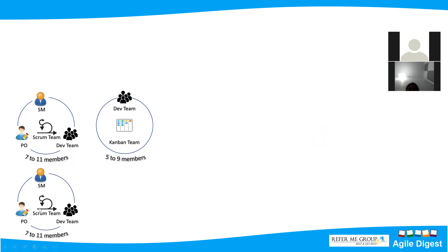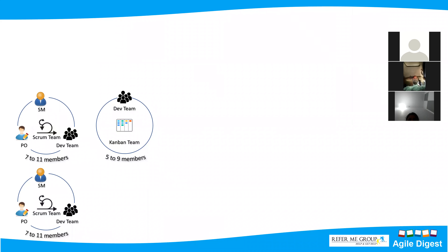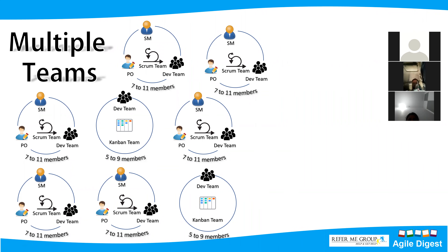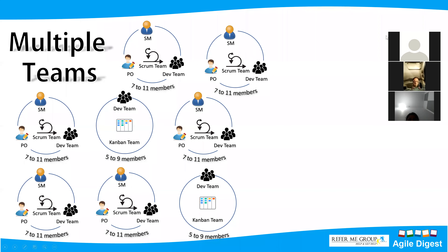If we have multiple teams — in a large organization, to complete one portfolio idea or one product, we may need multiple teams. If we have multiple teams working for one value stream or one big goal, how will we manage them? Scaled agile provides a framework that actually binds all the teams together.